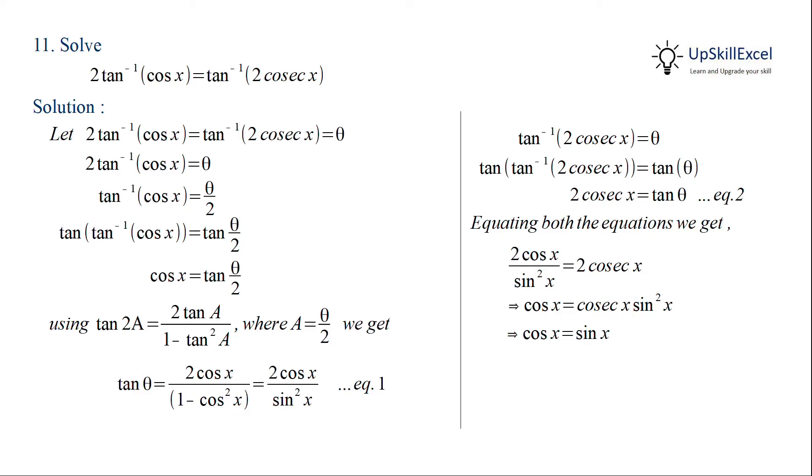Now this is possible only when x is equal to pi by 4 in the first quadrant, or x is equal to 5 pi by 4 which is in third quadrant. So the general solution is x is equal to n pi plus pi by 4 where n belongs to Z.